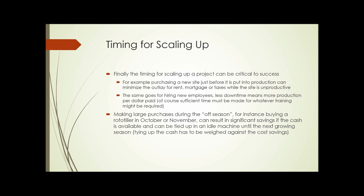Making large purchases during the offseason can result in significant savings. For example, if you're going to buy a rototiller in October or November at the end of the season, when the seller will have to store it through the winter, you can often get real and significant savings. You have to weigh that against the fact that you're going to have to outlay that cash in the fall, and you'll have a machine sitting idle until the next growing season. Weigh the money saved versus the money tied up.